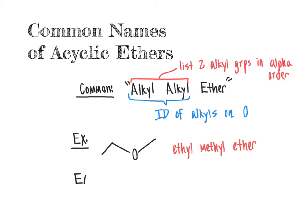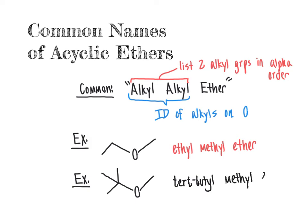We can look at some other possibilities as well. For example, on one hemisphere we have a methyl group and on the other a tert-butyl group. Alphabetizing those — and ignoring the term tert — it would be tert-butyl methyl ether. Just as a reminder, tert, since it's a hyphenated term, is not included in the alphabetization scheme. So we start with butyl, then methyl ether — B comes before M, so that's why we put it in that order.